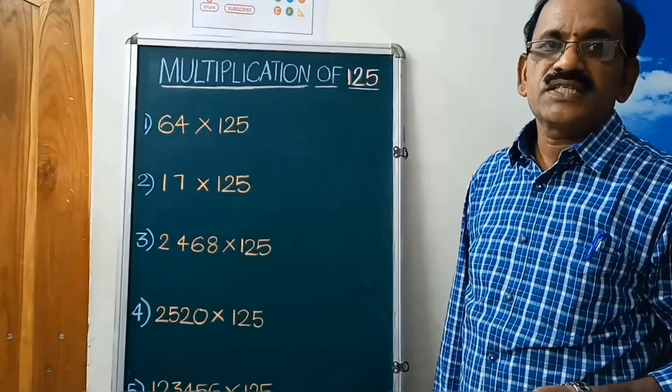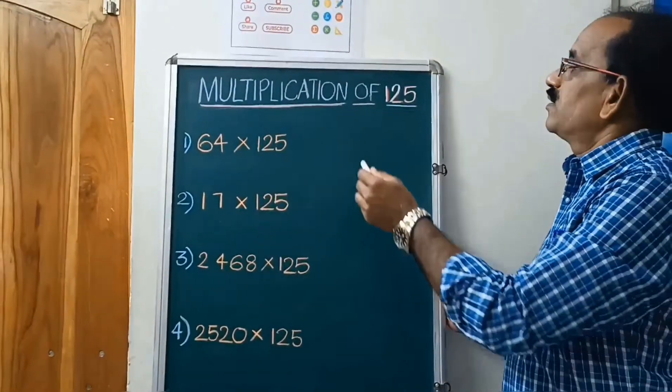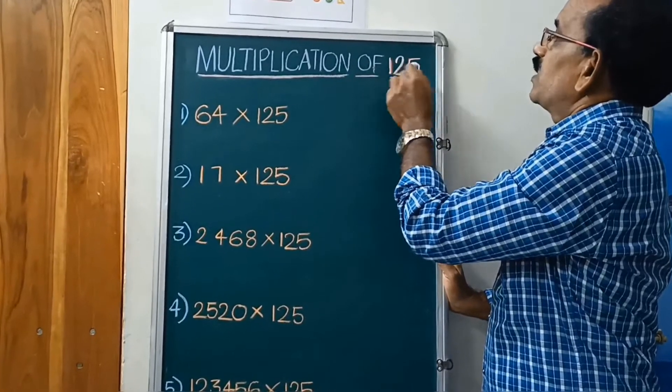Welcome to Vedic Maths and Speed Maths by Ramaro Gongada. Multiplications of 125.